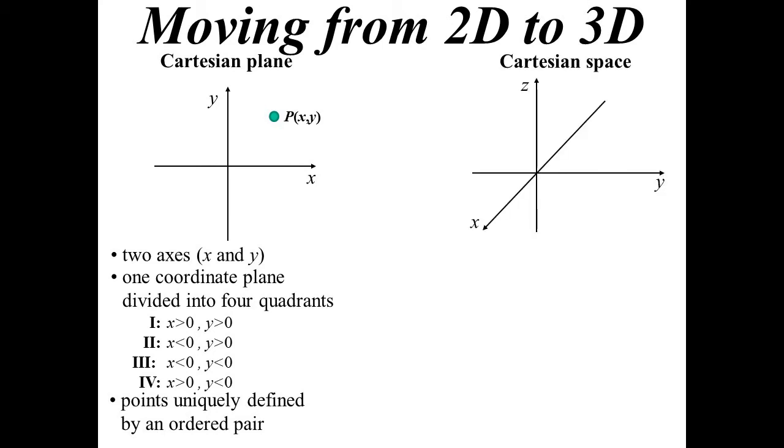Well now we're moving into three dimensions, so we have a Cartesian space. In three dimensions, you'll notice my coordinate plane or Cartesian plane is lying flat if you like, and we then have a third axis going through the origin, the z axis going vertically up. So this is the orientation we normally draw our three-dimensional Cartesian space. It now has three axes: the x, the y, and the z.